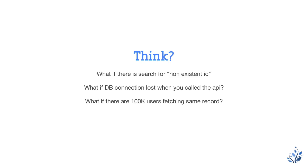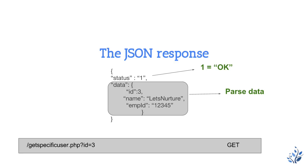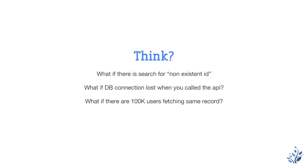Now think about what happens if there is a search for a non-existent ID — for example, searching user ID 9245 which is not in our database. Usually in the controller we fetch that record, and when the result set is null, we prepare the same JSON as before with status 0, and inside or outside data we put a message key with a value like 'no record found' or 'no user found'.